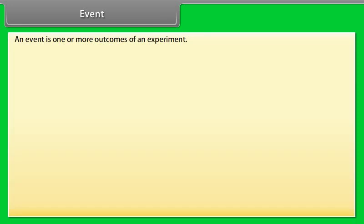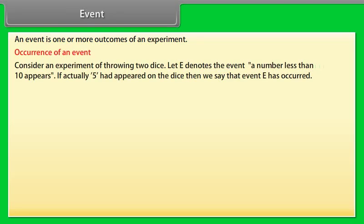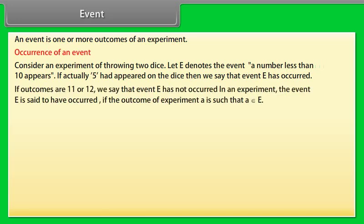Event. An event is one or more outcomes of an experiment. Occurrence of an event: consider an experiment of throwing two dice. Let E denote the event 'a number less than 10 appears.' If actually 5 had appeared on the dice, then we say that event E has occurred. If outcomes are 11 or 12, we say that event E has not occurred.